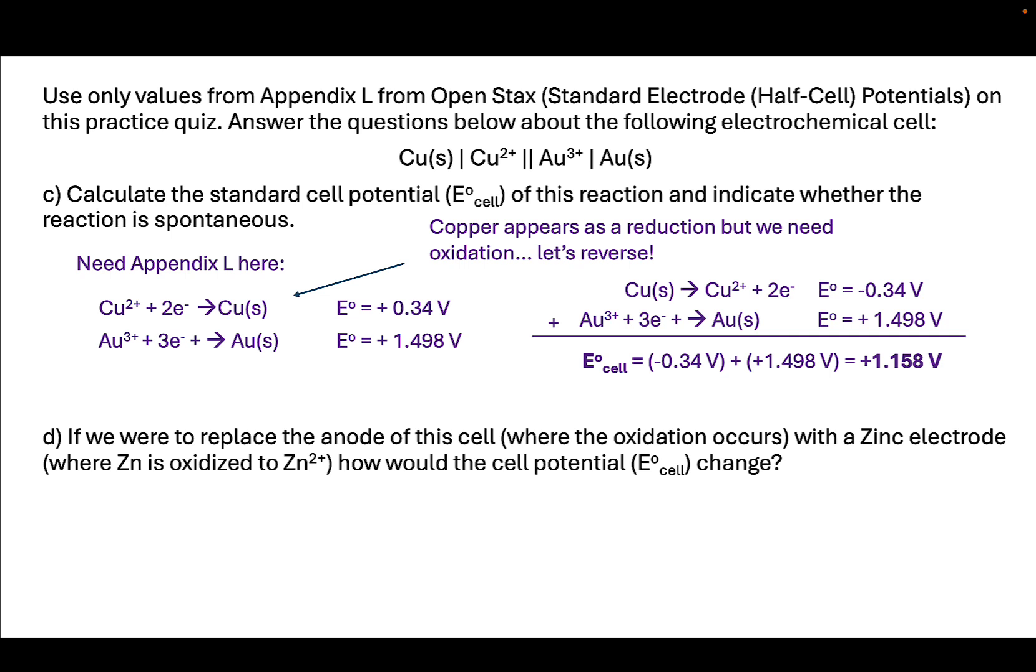What if we were to change the anode here with a zinc electrode where we oxidize zinc? How would the cell potential change? So let's instead, for our oxidation, investigate zinc. From the previous, we do get a positive cell potential, which means it's spontaneous and therefore is going to generate energy. The electrons will move through this reaction with a voltage—they'll generate energy.